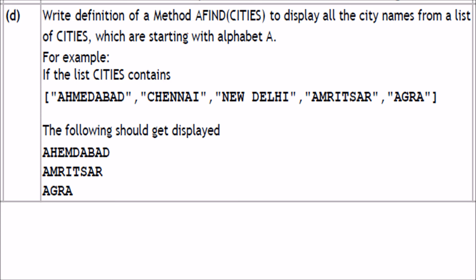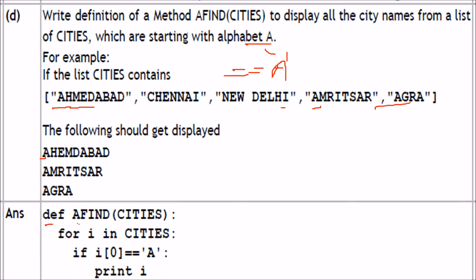Write a definition of method 'Afind' to display all city names from a list of cities which start with the alphabet 'A' — for example, Amritsar, Ahmedabad, and Agra. The logic is easy: check the zeroth character of each city name. Define 'Afind(cities)': for i in cities, if i[0] == 'A', print i. This will display all cities starting with A.